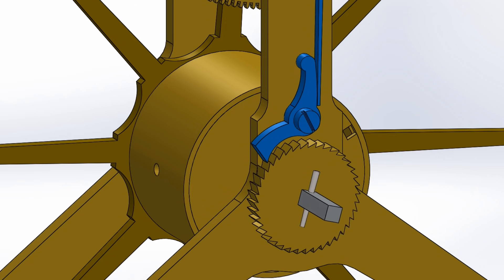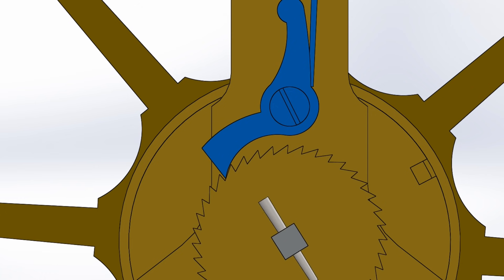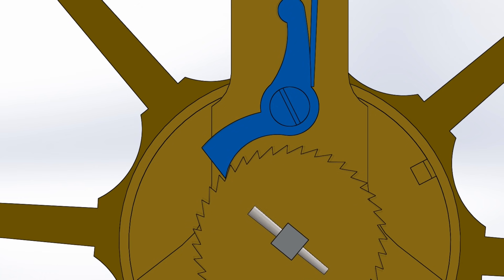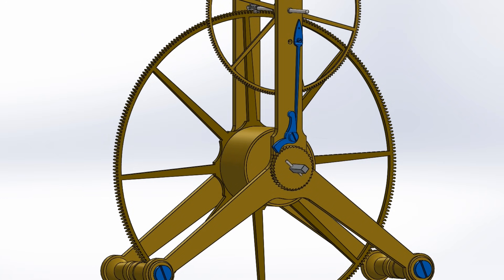At the completion of each winding turn, the pressure is released from the winding square, and the click locks into the base of the last tooth to pass. This immobilizes the ratchet wheel, and by connection the barrel arbor.